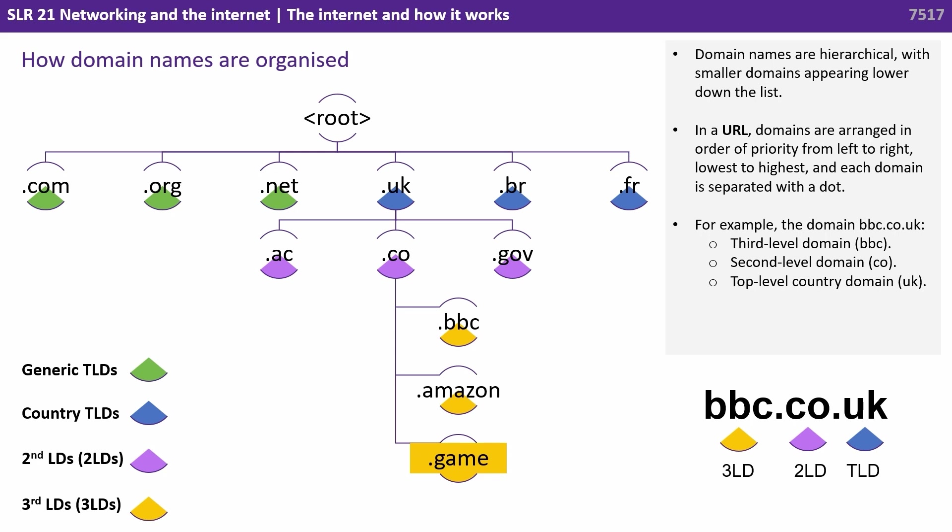For example, the domain name bbc.co.uk is broken down by the third level domain, bbc; the second level domain, co, meaning company; and the top level country domain, UK.